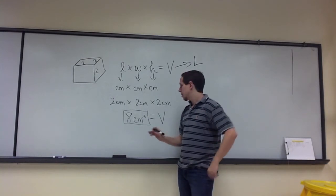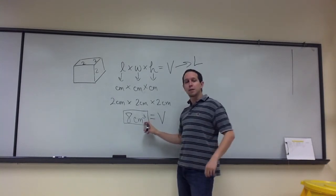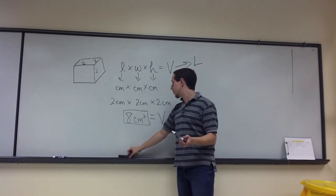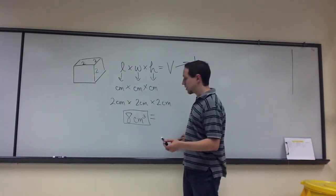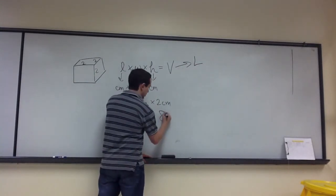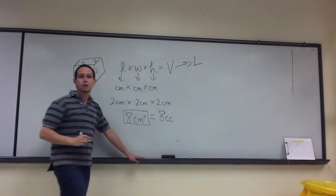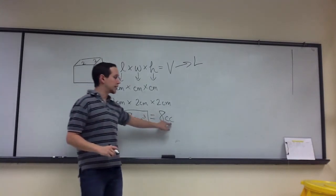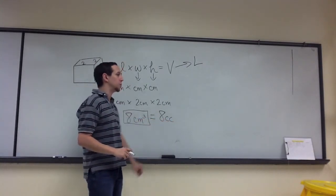Well, the interesting thing is that centimeters cubed actually is referred to in the medical profession by a different name. It's similar to centimeters cubed, except it's called cc's, or cubic centimeters. So centimeters cubed is the same as cc's, or eight cubic centimeters.